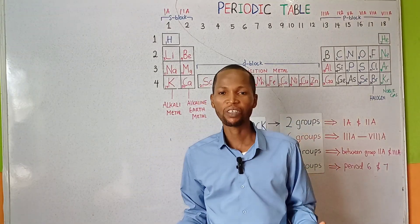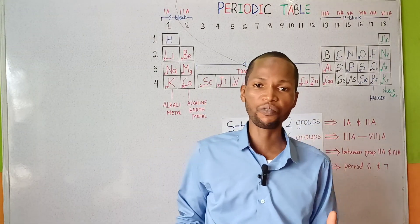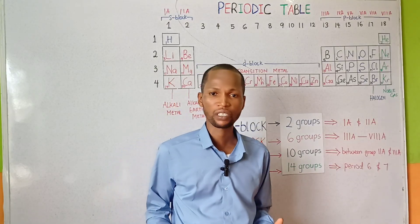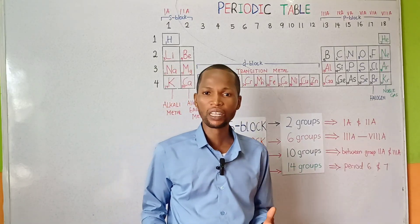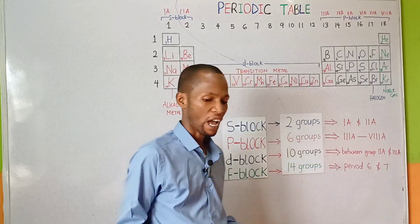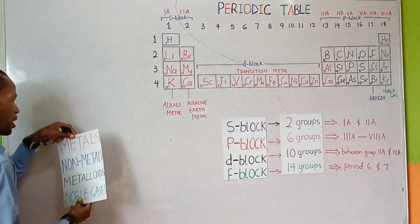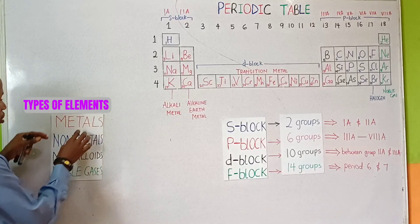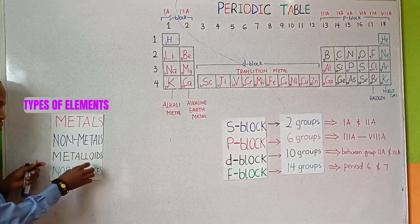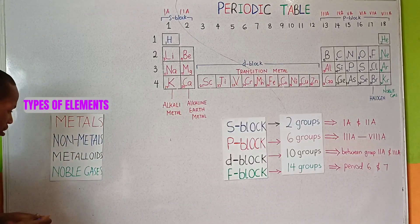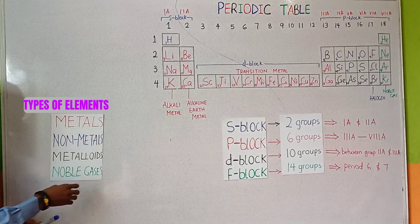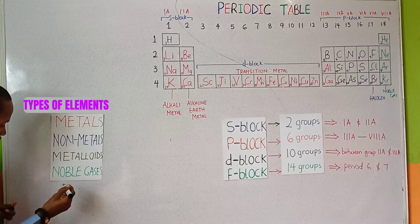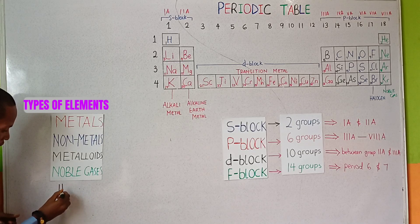Moving on, we have the classification of elements into types. Elements in the periodic table can be classified as metals, nonmetals, metalloids, noble gases, as well as hydrogen.